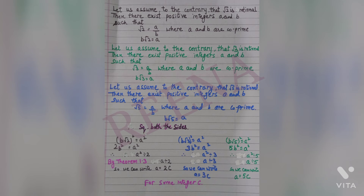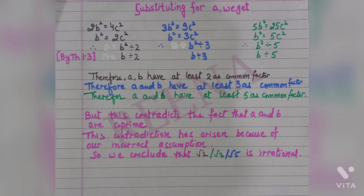Since a² is divisible by 2, Theorem 1.3 is used to show that a is also divisible by 2, and we write a = 2c. The same process for √3 gives a = 3c, and for √5 gives a = 5c. The third step: substituting back gives 2b² = 4c², showing b² is divisible by 2, and from Theorem 1.3, b is divisible by 2. Similarly, b is divisible by 3 and by 5 for the respective cases.